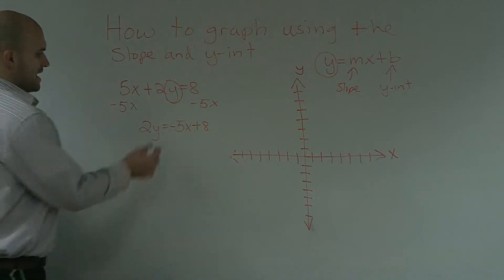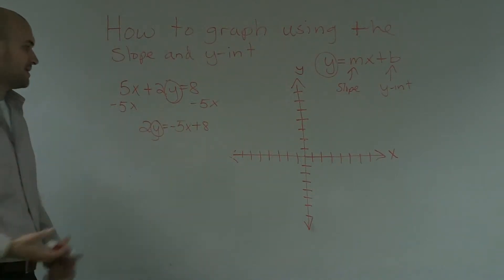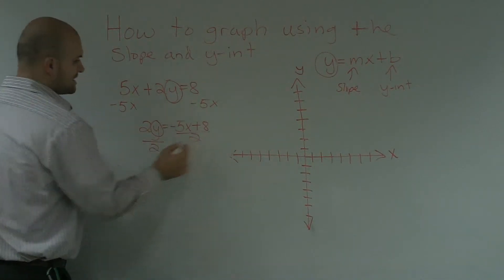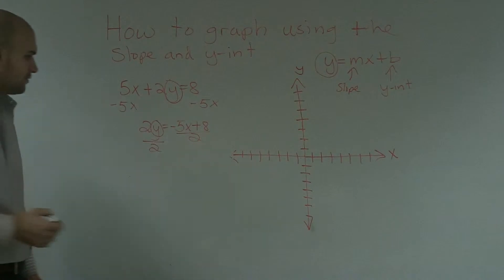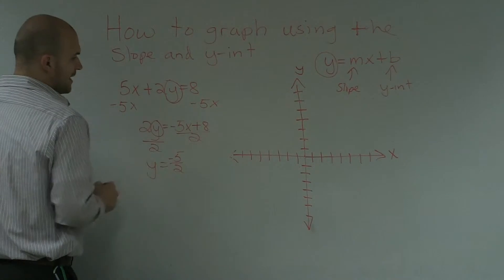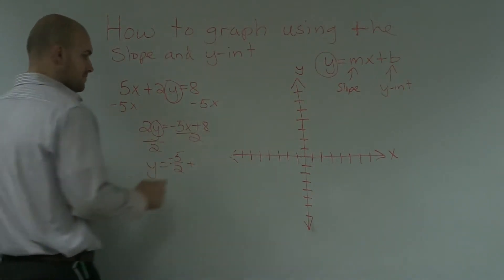Now, I still do not have my y by itself. It is still multiplied by 2. So I'm going to have to undo the multiplication by dividing by 2. I'm going to do it on both sides of the equation, which is division property of equality. I get y equals negative 5 halves plus 8 divided by 2, which is 4.